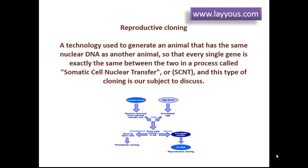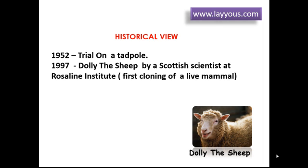Historical view: Scientists have been cloning animals for many years. The first trial of cloning done on animals was in 1952, using a tadpole. That was earlier than the creation of Dolly the sheep in 1997 by a Scottish scientist at the Roslin Institute — the first cloning of an adult animal cell that resulted in a live mammal. Prior to Dolly, clones were created from embryonic cells.